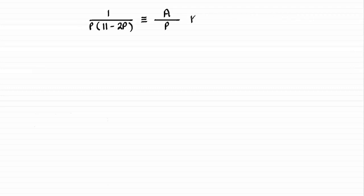Then we have plus the other linear factor, 11 minus 2P, and that's put below another constant. So we'll have B as that constant, and it'll be 11 minus 2P in the denominator.